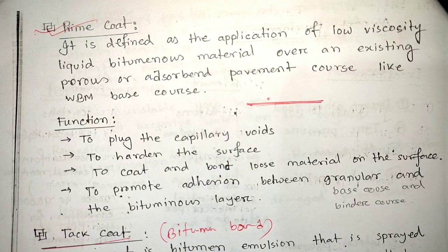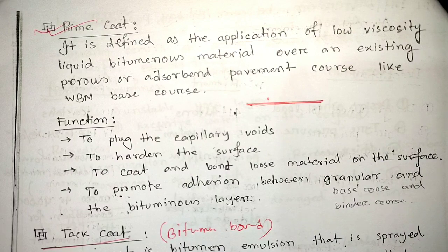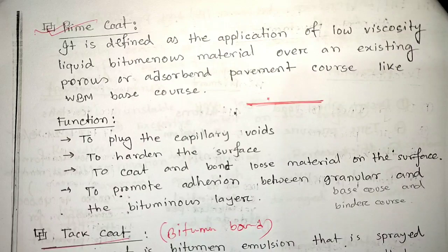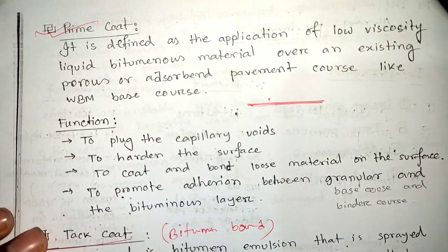Prime coat: We have a bituminous layer applied over the base course to bind the dust and the base. This is the prime coat.